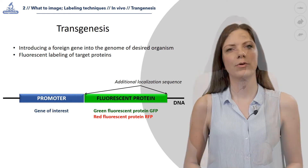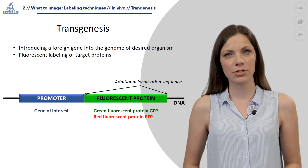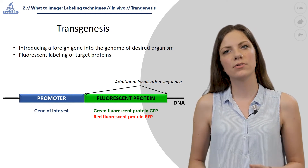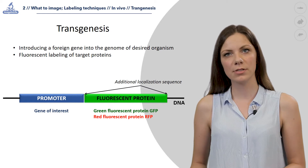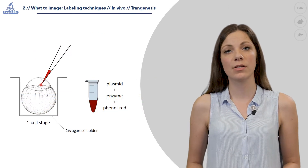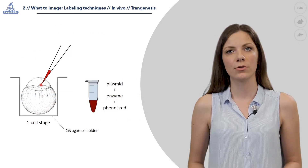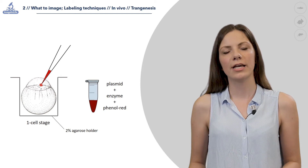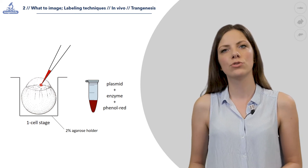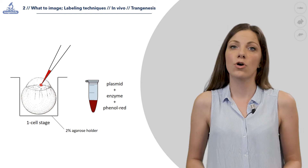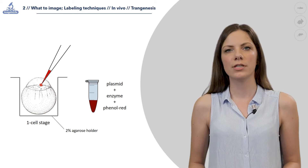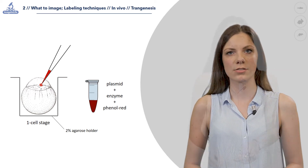To perform transgenesis of zebrafish, the desired DNA fragment has to be inserted into a plasmid and then injected into the one-cell stage zebrafish embryo, together with an enzyme that will integrate the DNA fragment into the genome of the organism, and optionally phenol red for easier visualization during injections.